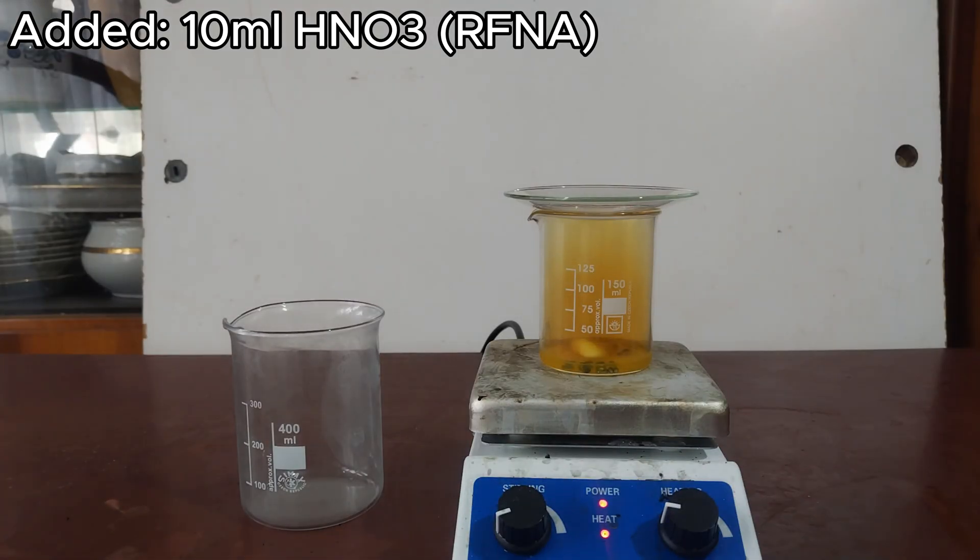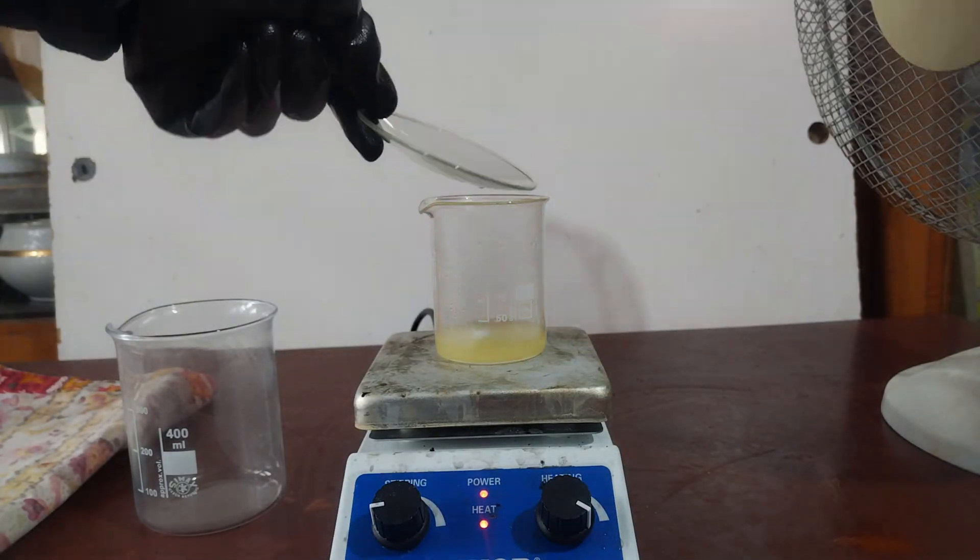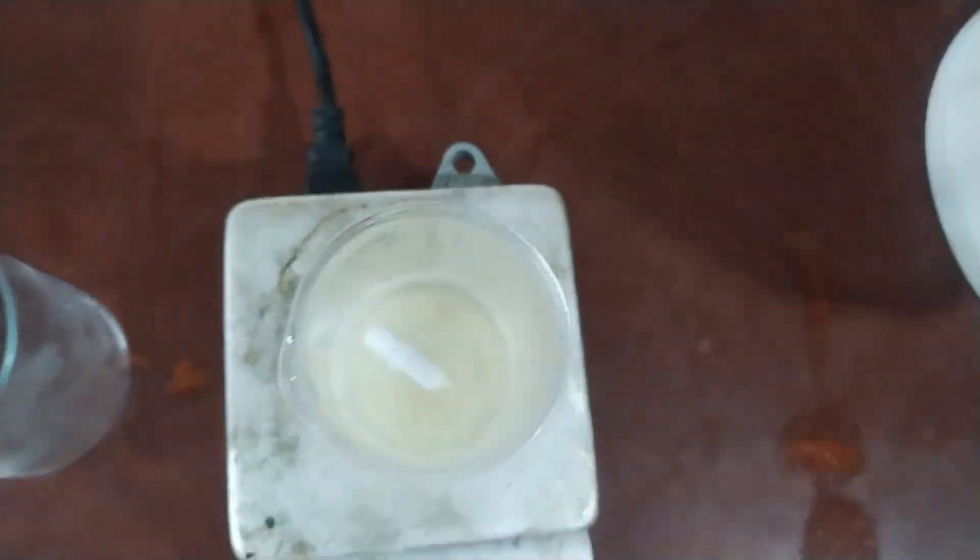It's 8 milliliters and not 7 because I wanted a slight excess just to make sure that it's all reacted. And then you put the mixture into a freezer and let it crystallize and that's the end.